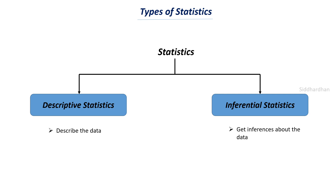Now let's understand where we can use these approaches. There are two main fields that use statistics and machine learning a lot: data analysis and data science. A data analyst gets the data and does a lot of analysis to understand it better. For example, a company can hire a data analyst to analyze their previous year's sales, finding total investment, profit made, profit percentage, and other insights from the data.